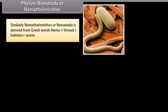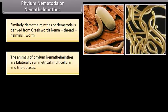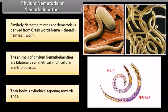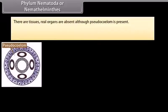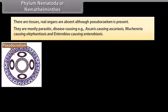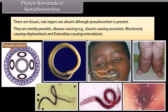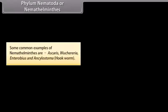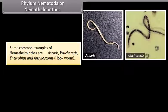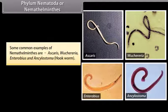Phylum Nematoda or Nemathelminthes. The word nematoda is derived from Greek words: nema, thread, plus helminth, worm. The animals of phylum Nematoda are bilaterally symmetrical, multicellular, and triploblastic. Their body is cylindrical, tapering towards ends. There are tissues but real organs are absent, although a pseudocoelum is present. They are mostly parasitic and disease-causing, e.g. Ascaris causing Ascariasis, Wuchereria causing Elephantiasis, and Enterobius causing Enterobiasis. Some common examples are Ascaris, Wuchereria, Enterobius, and Ancylostoma (hookworm).